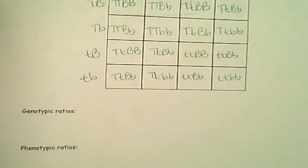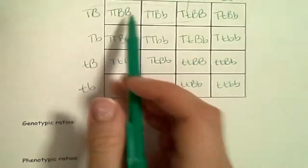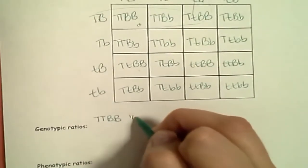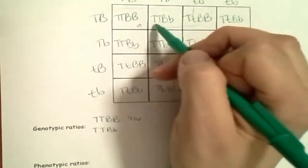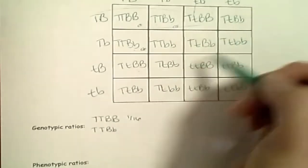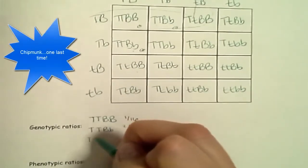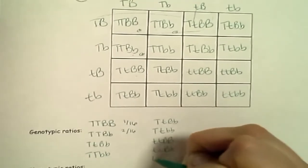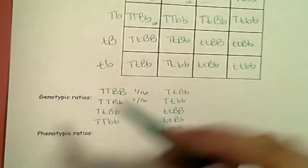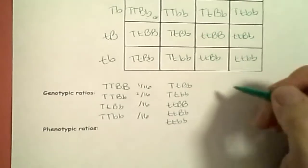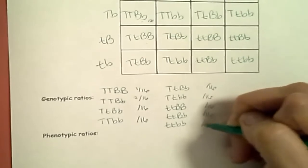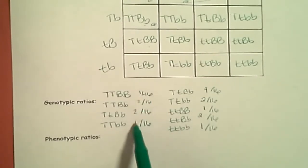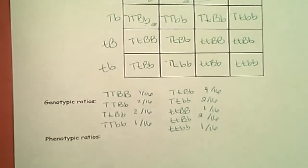Now genotypes — write out all the possibilities. There are a lot in this one. Big T big T big B big B: only one of those — one out of 16. Big T big T big B little b: two out of 16. Go through and count out each option, fill it out of 16. You should have: one, two, two, one — four, two, one — two, one. If you don't know how to get that, come see me.